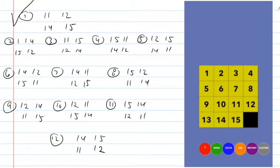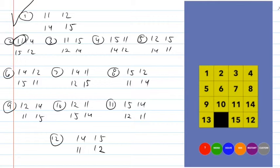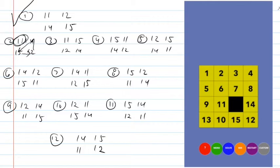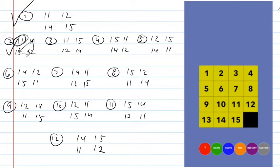In case two, the eleven is already in its proper place, and the other three — fourteen, twelve, and fifteen — need to be cycled. We want twelve to go where fourteen is, fourteen to go where fifteen is, and fifteen to go where twelve is. So you move the blank, shift the eleven over to make room, cycle those three tiles around, then bring the eleven back.